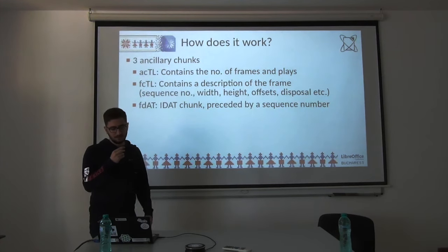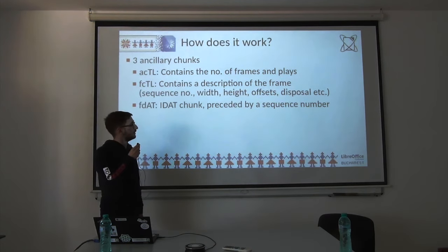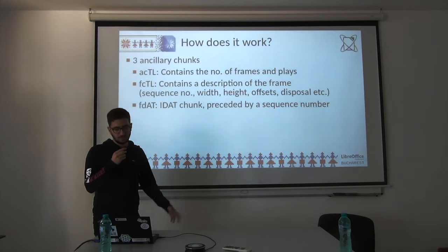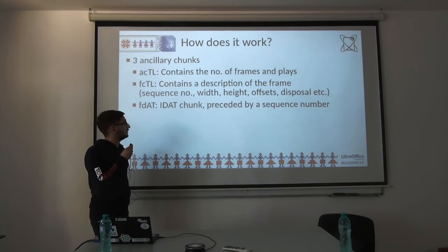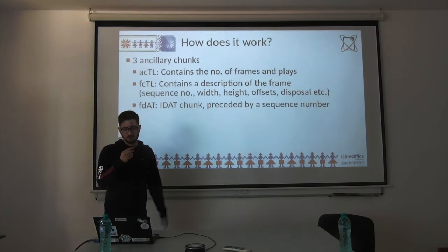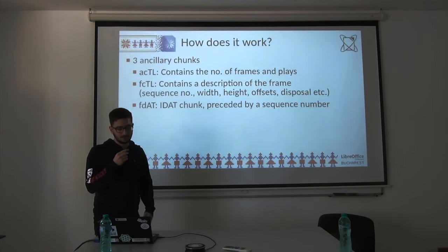APNG introduces three new ancillary chunks. The first is the ACTL, which describes how many frames there are and how many times the animation should be replayed. The FCTL describes the upcoming frame — sequence number, width, height, offsets, etc. And the FDAT, which like the IDAT chunk contains the pixels of the frame, also preceded by a sequence number to match it up with the FCTL.